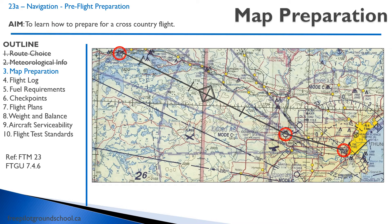We draw a line between those two points and mark 10 nautical mile markings. In the middle, I just make a diamond so that I know I'm at the halfway point. Then I draw a line from my departure point to the set heading point, and then I do a 10-degree drift line. That's how we get started with preparing our map.